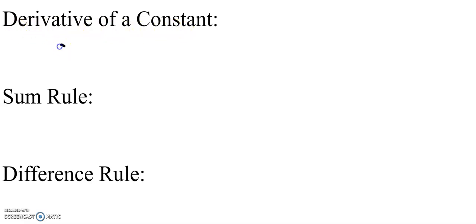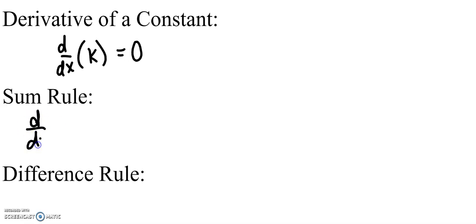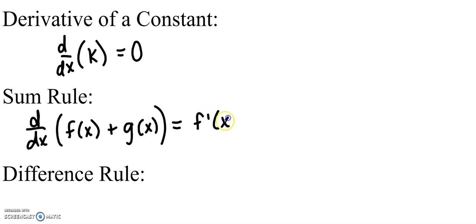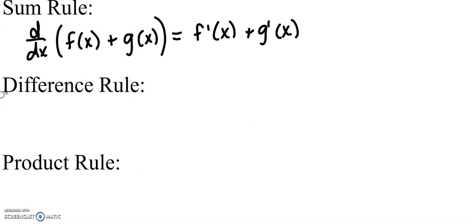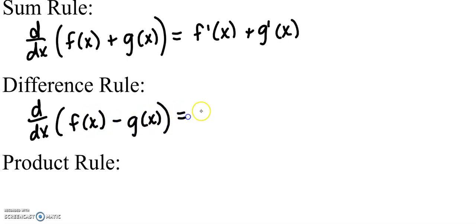The derivative of a constant — taking the derivative with respect to x of some constant k — is going to be 0. The derivative of a sum: taking the derivative of f(x) plus g(x) equals the derivative of f plus the derivative of g. The difference rule: the derivative of f(x) minus g(x) equals the derivative of f minus the derivative of g.